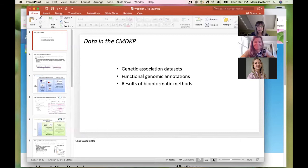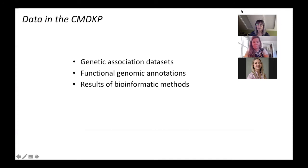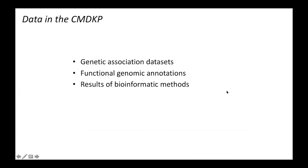Okay, so before going to the live demo, I just wanted to briefly review some of the data types that we have in the portal so everyone's clear on them. Basically, there are three categories: genetic association data sets, of course; functional genomic annotations; and results of bioinformatic methods. I'll talk about each one in a little bit of detail.